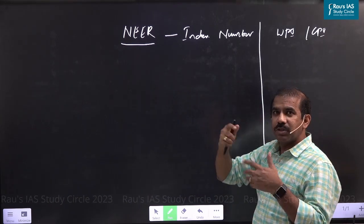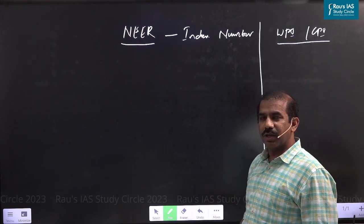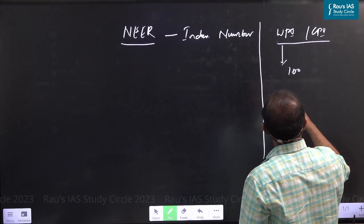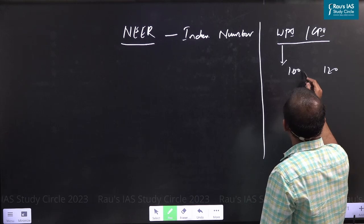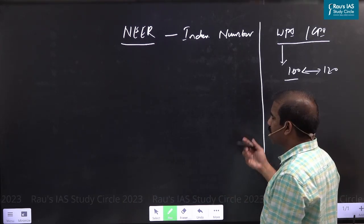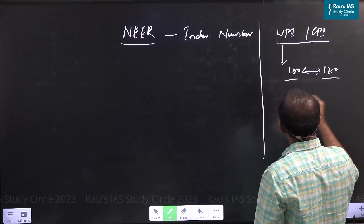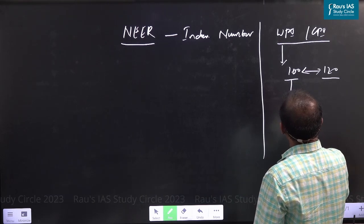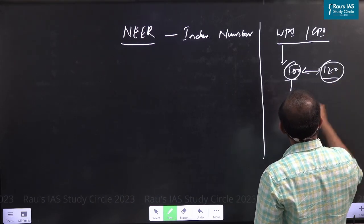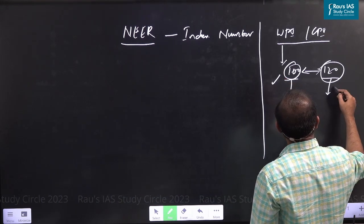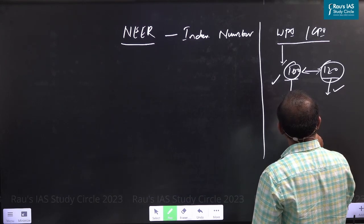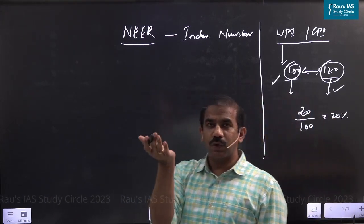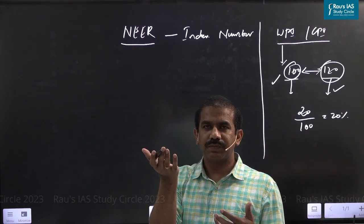Before going ahead with NEER, let me brush up what an index number means. Take any index number — imagine it is 100 in a base year. Sometime later, if the index number goes up to 120, how would you interpret this? The simplest way is: the basket of goods that you could buy for 100 rupees is now costing you 120 rupees. That's a 20-rupee rise on 100, meaning a 20% rate of inflation. So the basket of goods expressed in rupees has experienced a rise in value — that's what the index number conveys.